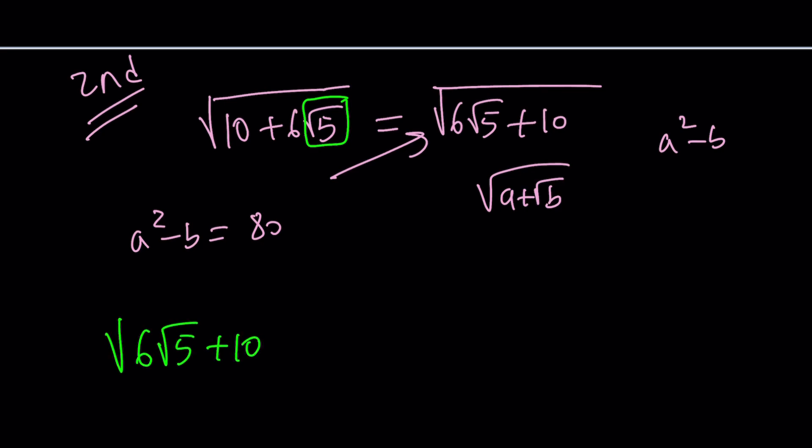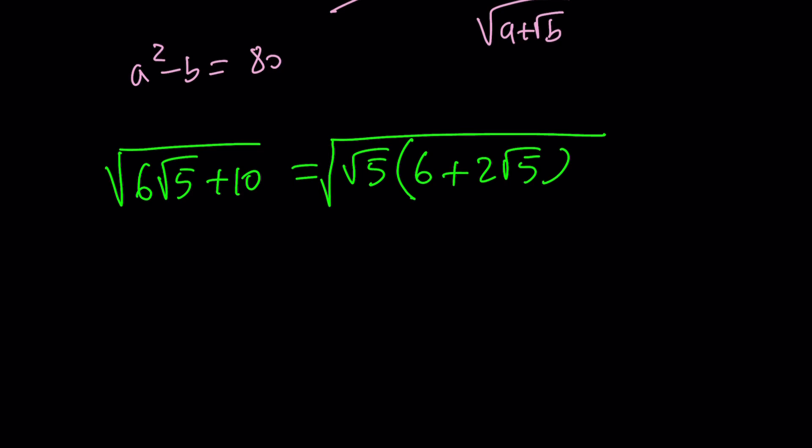I need to factor out a root 5. And that's going to give me 6 plus 2 root 5. You get it? Now this is in the desired format. See that? That's a good one. But what about the square root of 5? The square root of the square root of 5? We're just going to write it like that. And that kind of brings us back here, which is kind of valid.